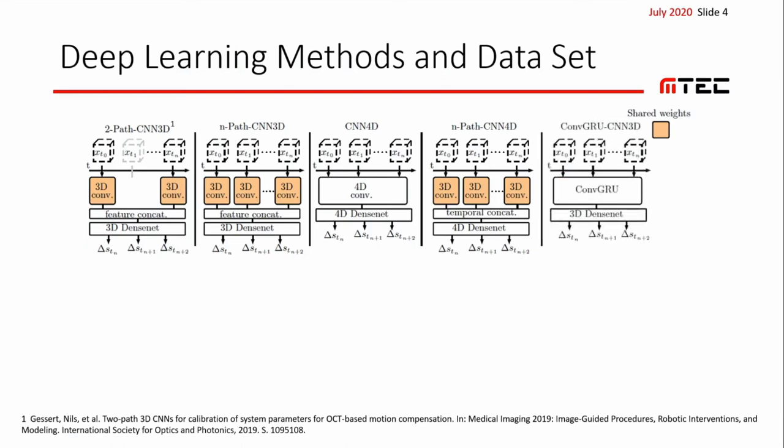Fifth, we first process the sequence of volumes with a gated recurrent network with convolutional gating operations. Then we apply our 3D baseline CNN to the output of the recurrent network.